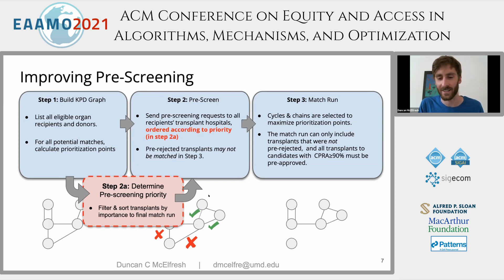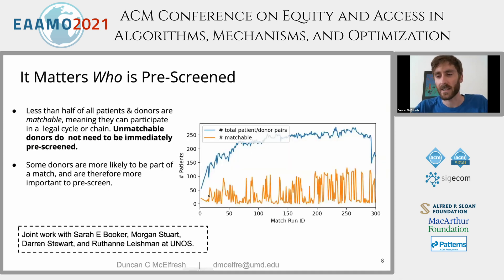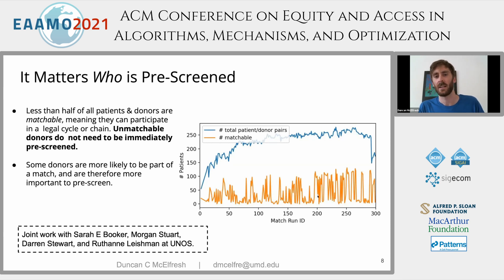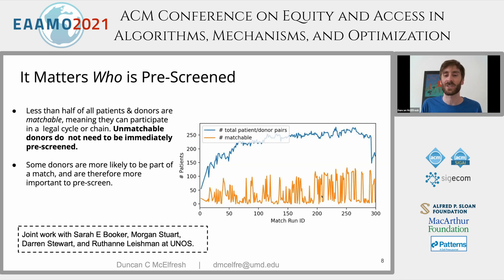At the applied side, this is an interface design problem. To motivate why it's important to choose which transplants are pre-screened, we looked at historical data from all of UNOS's past match runs. We found that less than half — often less than a third — of patients and donors who are medically compatible with each other can actually be matched via exchange. This blue line shows the number of patient-donor pairs in each exchange, and the yellow line shows the number who can actually be matched. So when thinking about pre-screening donors, we only want to show transplants that can actually be matched, which is a very small number overall.